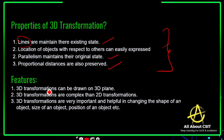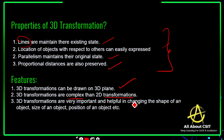Coming to the features of 3D transformation: 3D transformation can be drawn on a 3D plane. These are more complex than 2D transformations, because we are representing every object in 3D graphics rather than a 2D plane. 3D transformations are very important and helpful in changing the shape of an object, size of an object, and position of an object.